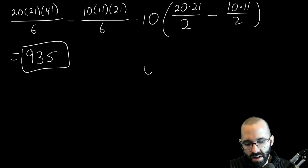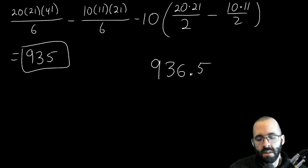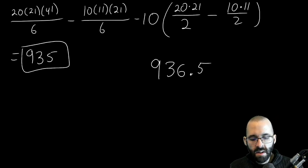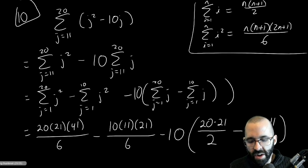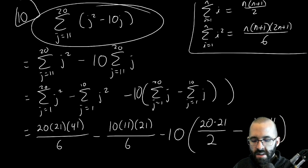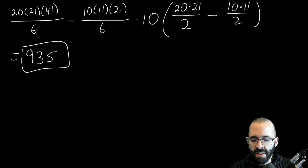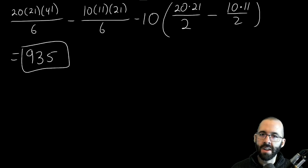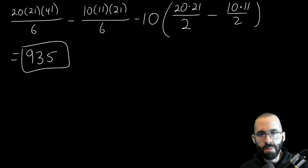A quick sanity check: what if you got 900, or 936.5? You could get a fraction because you have fractions in the formula. How do I know a non-integer is the wrong answer? In this original sum, j is always an integer — squaring it, multiplying by 10, taking differences, and adding them all up still gives integers. So we should only expect an integer answer. If you ever don't get an integer, watch out — you probably made a calculator or formula mistake.